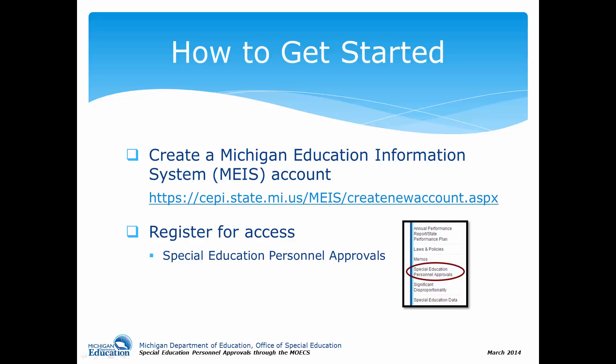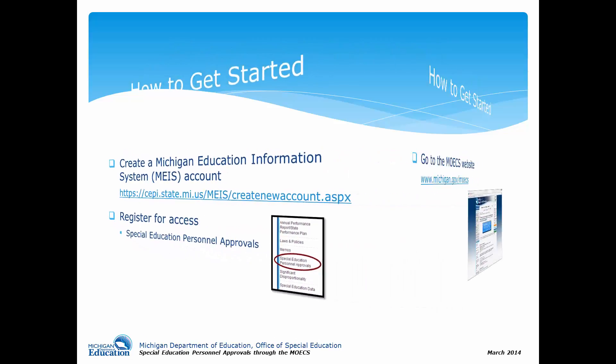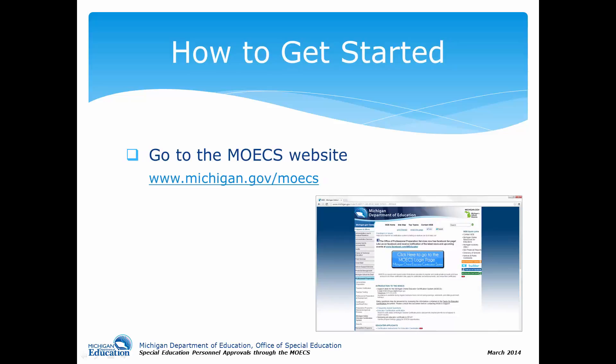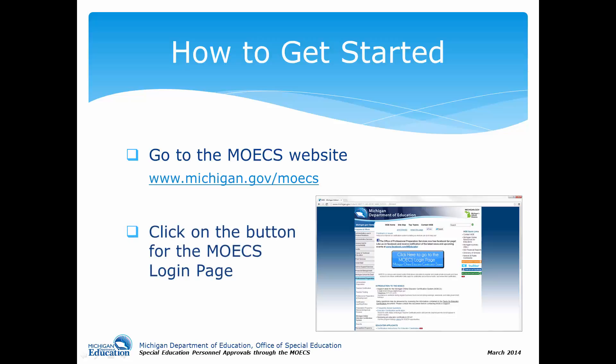Only authorized users will be able to access the system. Now let's get started on the actual steps involved with processing an approval. Visit the MOECS website at www.michigan.gov/moecs. Click on the button to go to the MOECS login page.